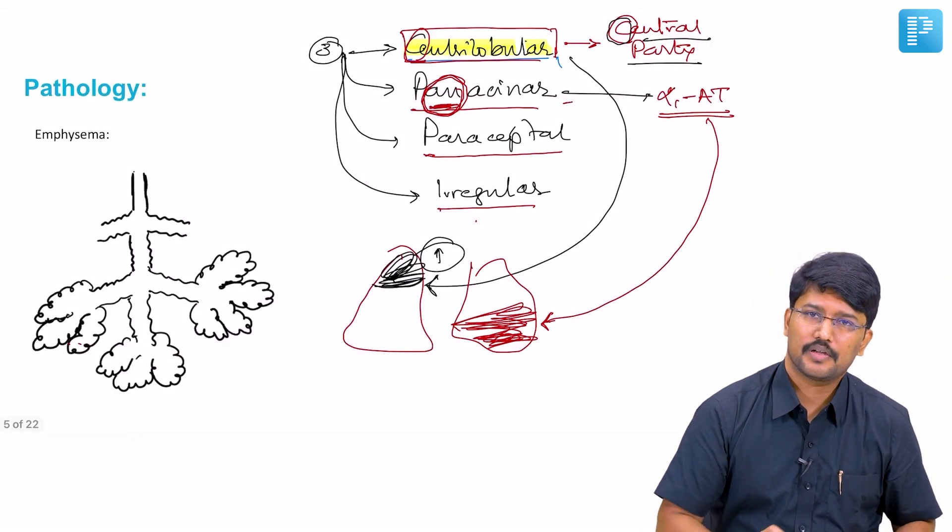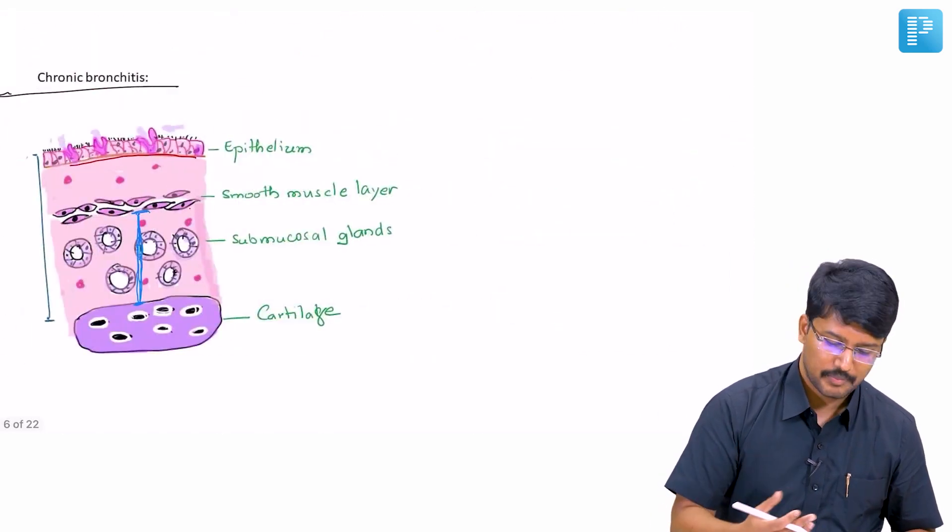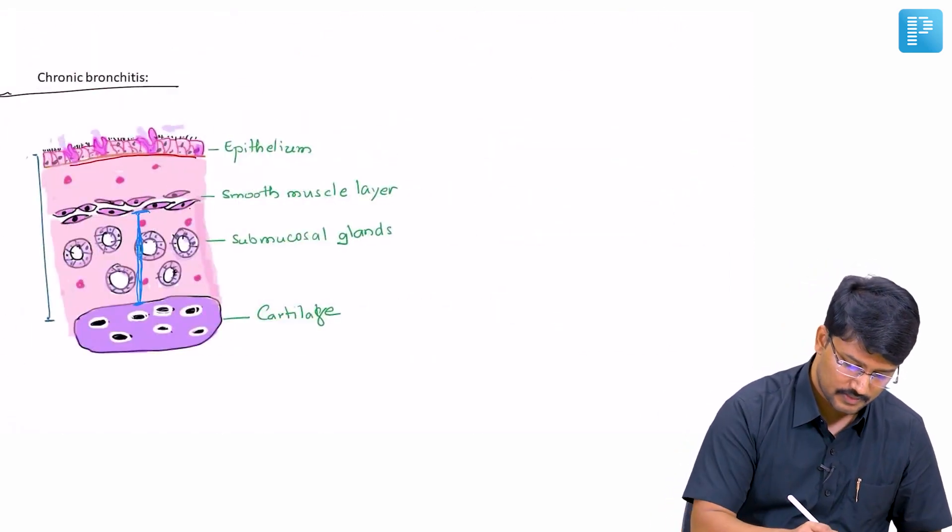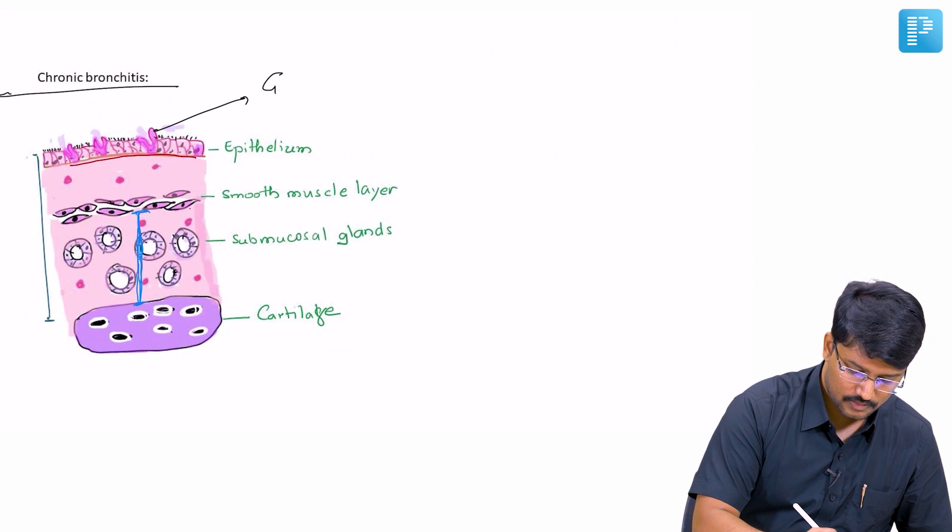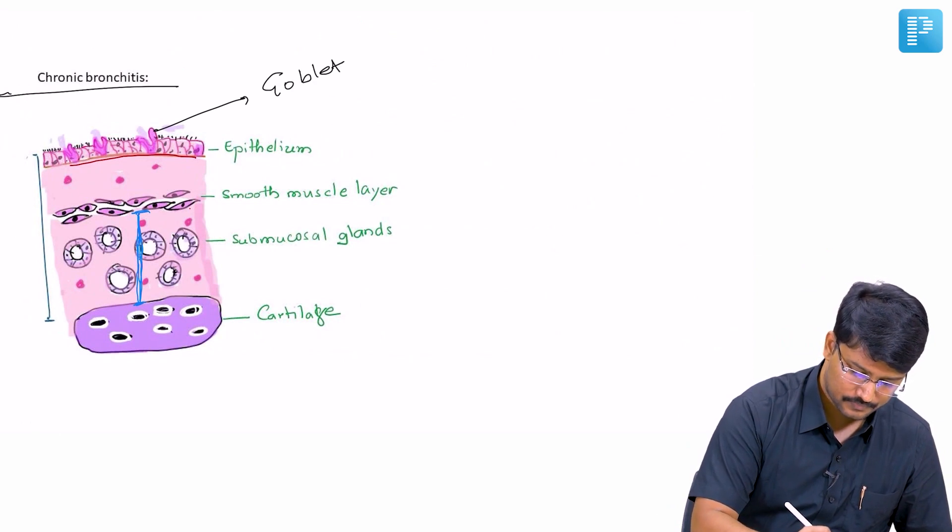Now, let us see what happens in chronic bronchitis. If you examine the histopathological slide, you will notice that there is goblet cell hyperplasia.